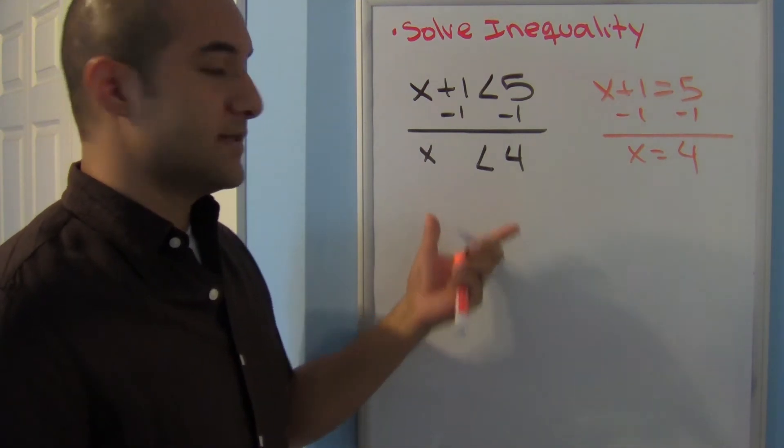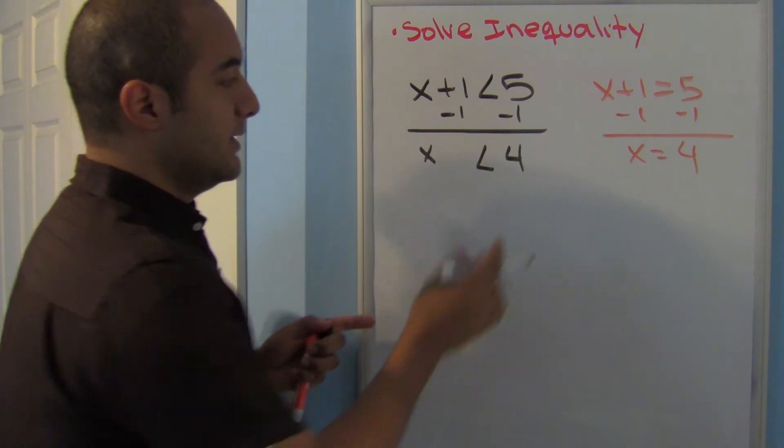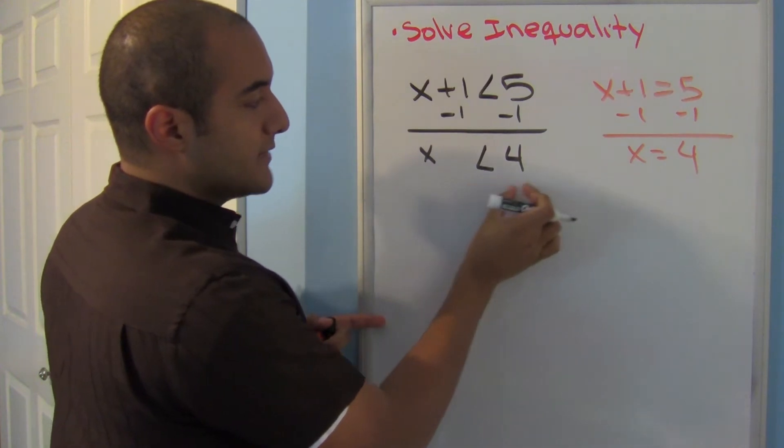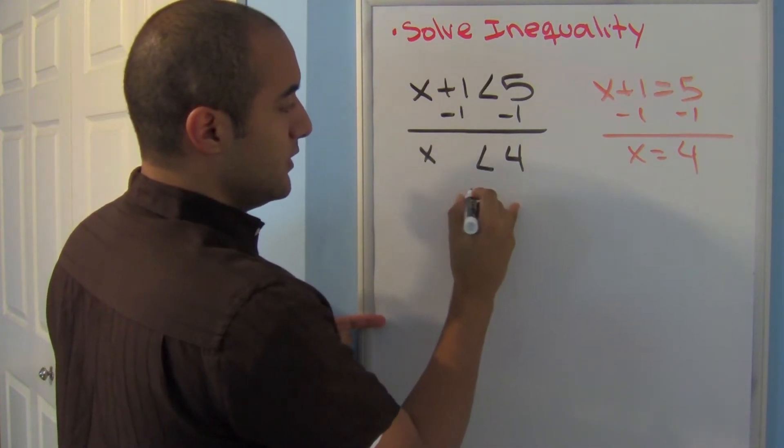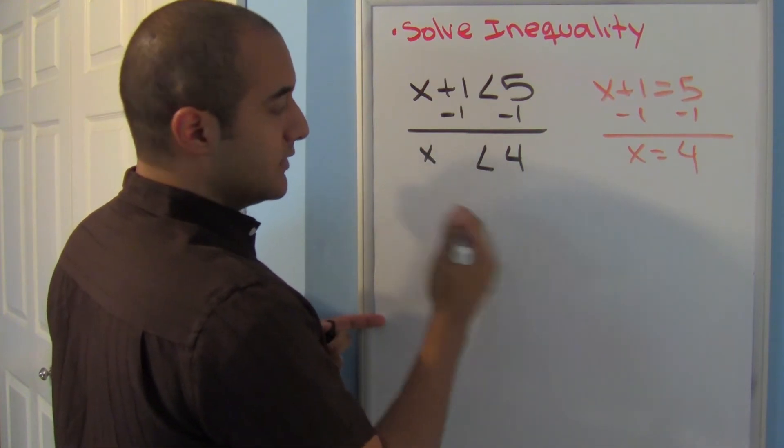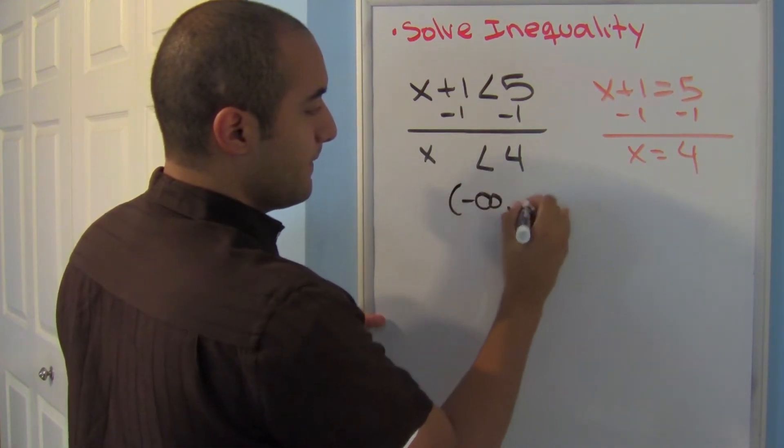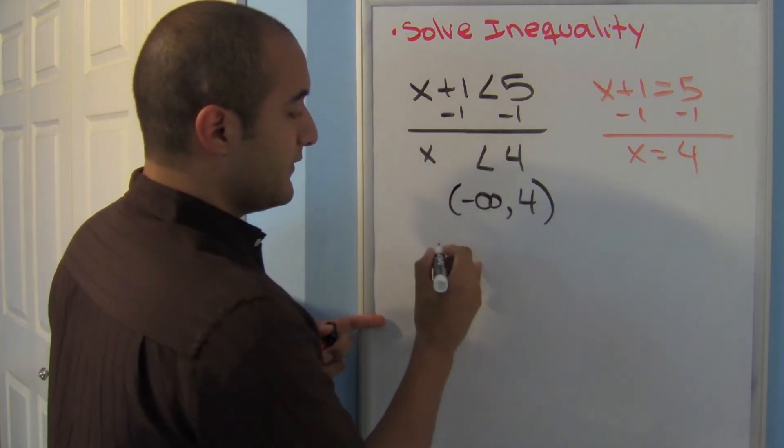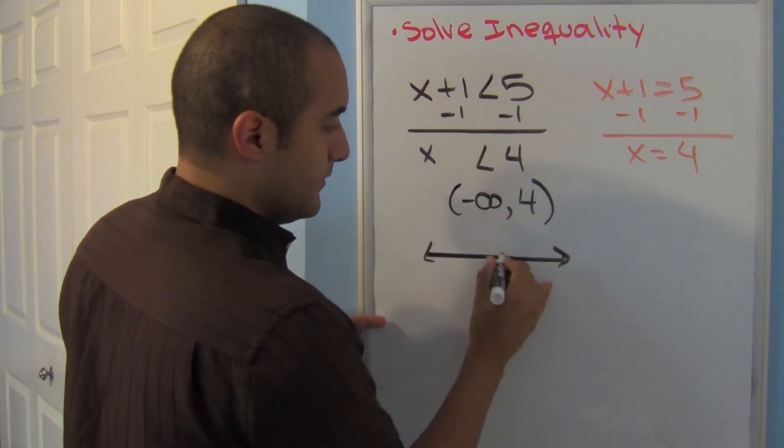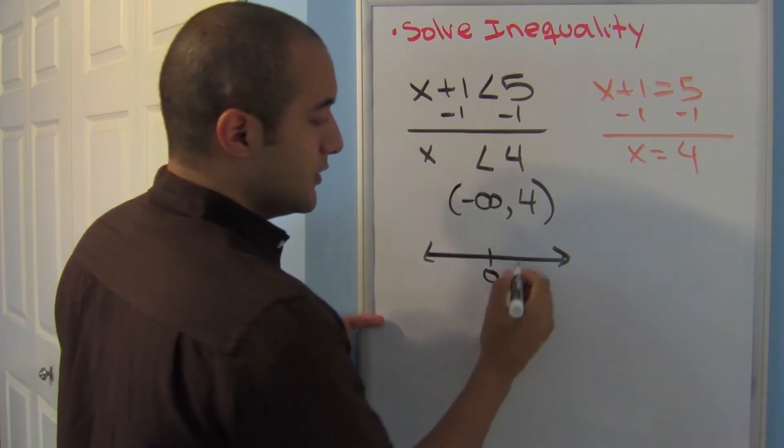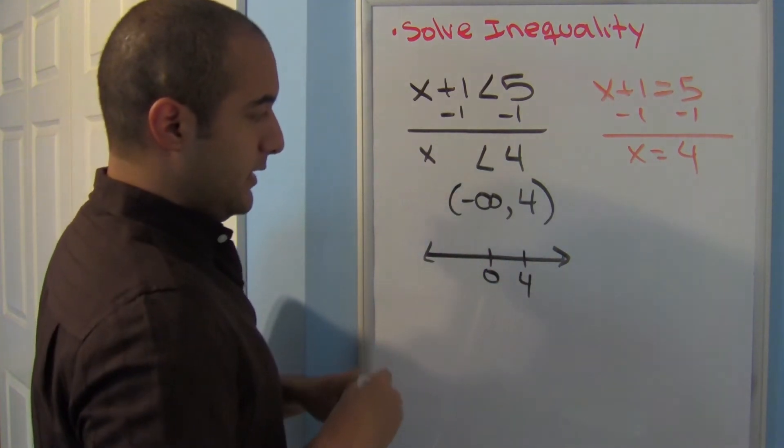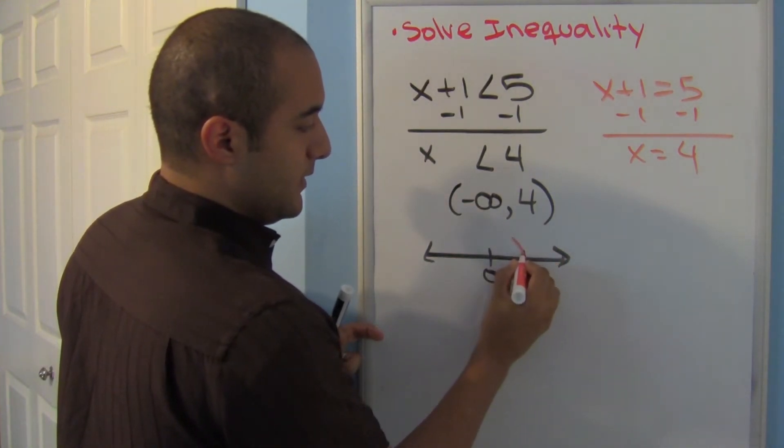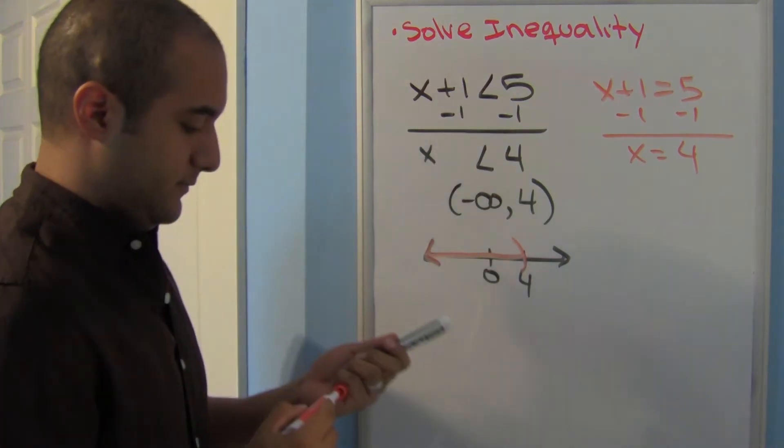Now if your professor is asking you to write this as interval notation, you just go ahead and switch it. Here you have, think about it as a sentence, your answers are less than 4. So that means that all your answers are going to be infinitely small. And this is a parenthesis because it doesn't have an equal to. And if we graph that, I always show 0. So I'm showing 0, I show 4, and now I'll just do my parenthesis, and I shade left there.